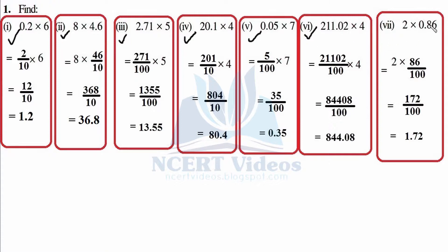For 2 × 0.86: write 2 as it is and write 86. Decimal with 1, number of digits — 1, 2 — therefore 2 zeros. Now 6 × 2 is 12, 1 is carry. 8 × 2 is 16 plus 1 is 17. So 172 over 100. Writing number as it is, 172, counting number of zeros — 2 — therefore place 1, 2. Result is 1.72.